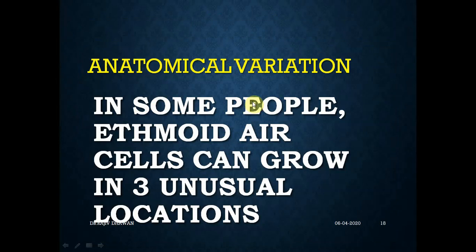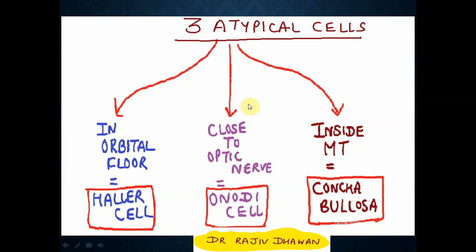There are some anatomical variations. In some people, ethmoid air cells can grow in three unusual locations, and depending on those locations, we have given specific names to those cells. The first two cells - bulla ethmoidalis and agger nasi - are constant and present in everyone. The upcoming three cells are variable, representing anatomical variations.